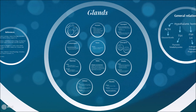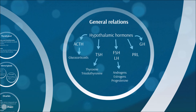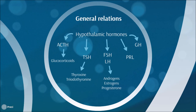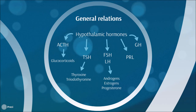Now we're going to see a general overview of the relations maintained between some of the hormones mentioned. Hypothalamic hormones control the secretion of many other hormones such as ACTH, TSH, FSH, LH, prolactin, and growth hormone. Each of these hormones in turn controls the secretion of others. For example, ACTH regulates the secretion of glucocorticoids; TSH controls thyroxine and triiodothyronine production; and FSH and LH regulate the hormones produced by the ovaries and the testes.